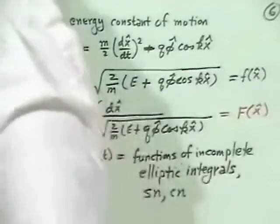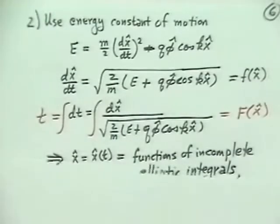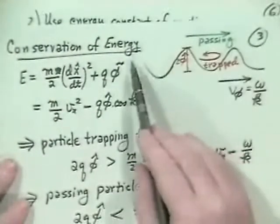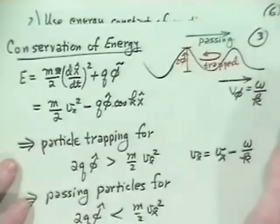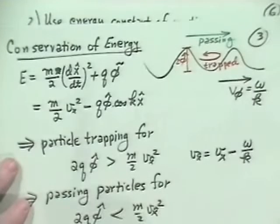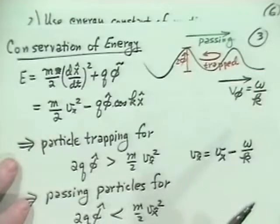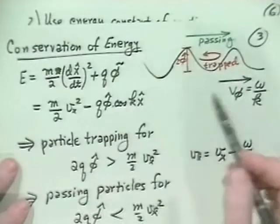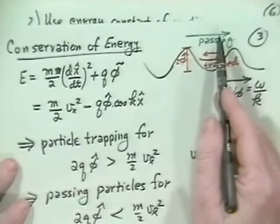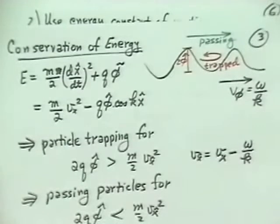The key point is: with finite amplitude, a wave traps some particles. Zero amplitude means nothing can be trapped. An infinitesimally small amplitude wave traps a few particles. This particle trapping introduces a new physical phenomenon. Mathematically it introduces an essential singularity — something non-expandable — because trapped particles are qualitatively different from passing particles.